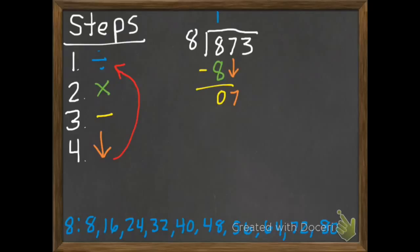And we start back at step number 1. How many 8's are in 7? We don't have any. So 0. 0 times 8 is 0. 7. Bring down. And we have 73.